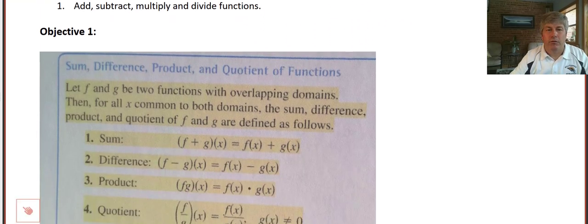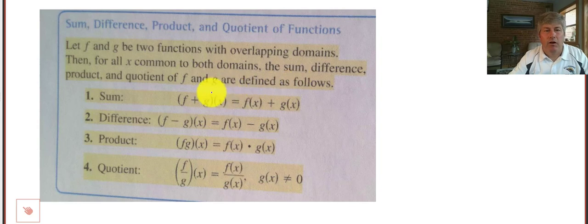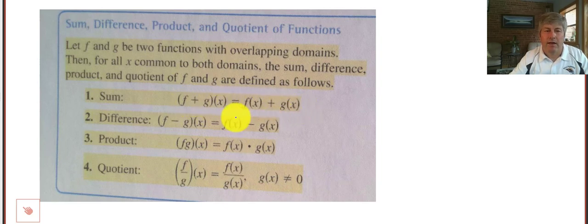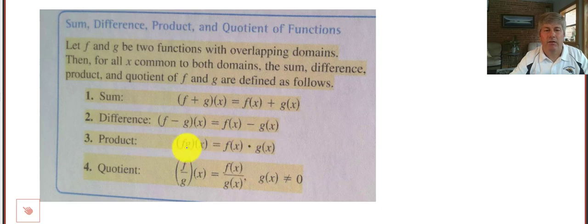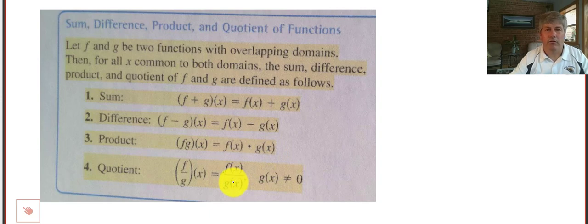Our first objective is to show that using function notation, we can add, subtract, multiply, and divide functions: f plus g of x is equivalent to f of x plus g of x; f minus g of x equals f of x minus g of x; f times g of x equals f of x times g of x; and the same for division, as long as our denominator is not zero.